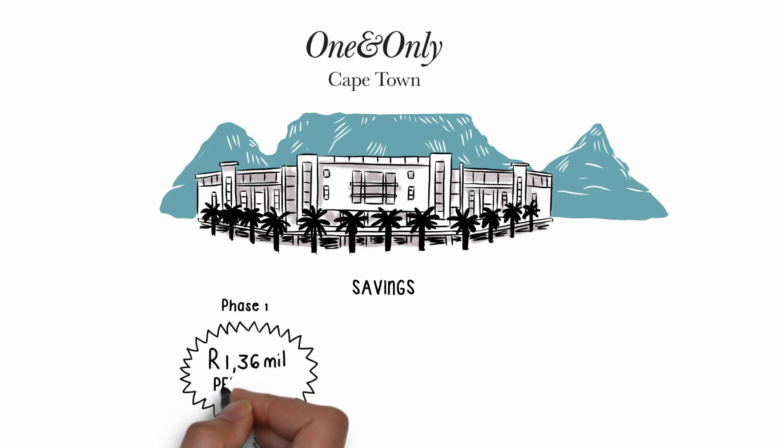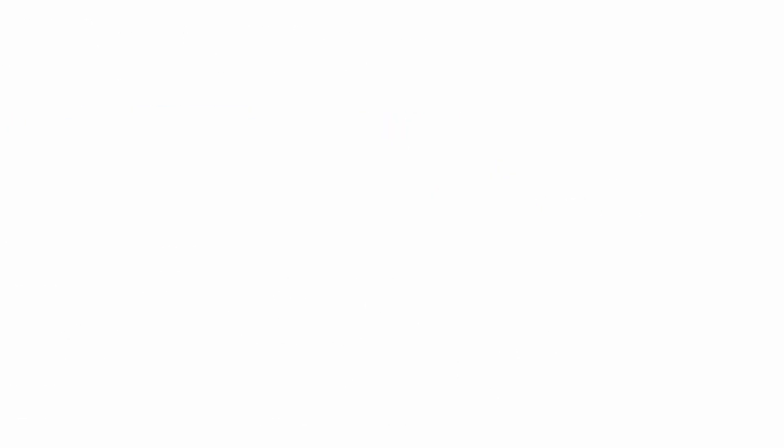Once Phase 2 has been implemented, they will save an additional 4.104 million Rand per year.